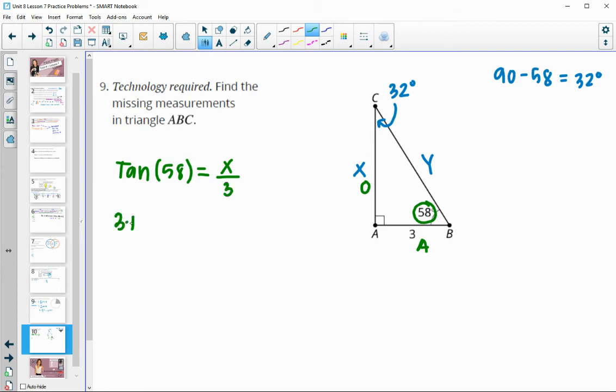So we would multiply that 3 up and we would do 3 times the tangent of 58 equals x. And then you just need your calculator to calculate that. So tangent of 58 is 1.6003, so multiply that times 3, and we would get x equals 4.8.